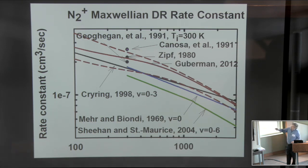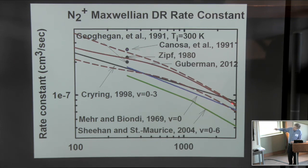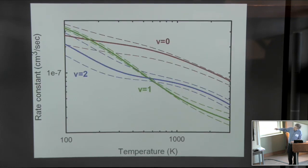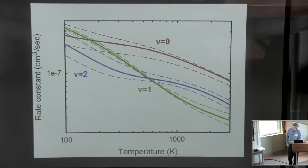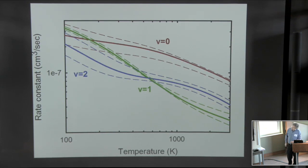A nice thing about estimating the rate constant this way is that instead of saying there's a constant uncertainty with electron temperature, which is not the case, one can show that the uncertainty varies with electron temperature. And in fact at the highest temperatures you can see the upper limit on the uncertainty was very close to the actual calculated rate.